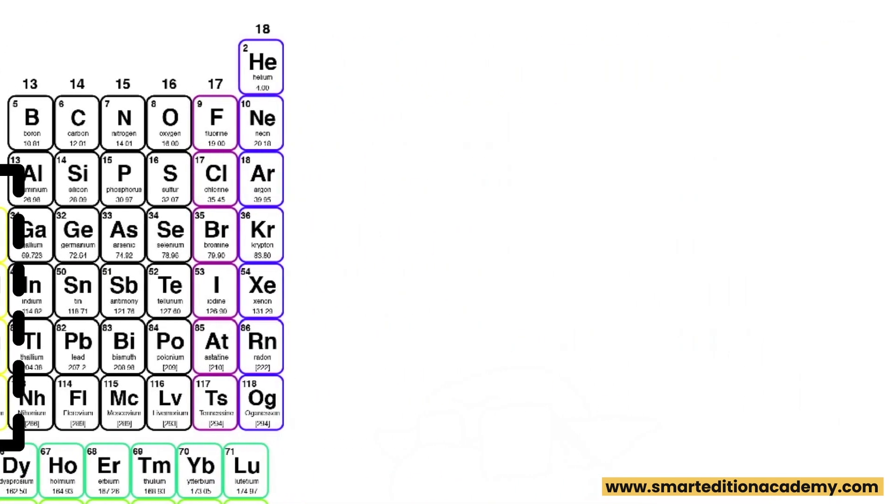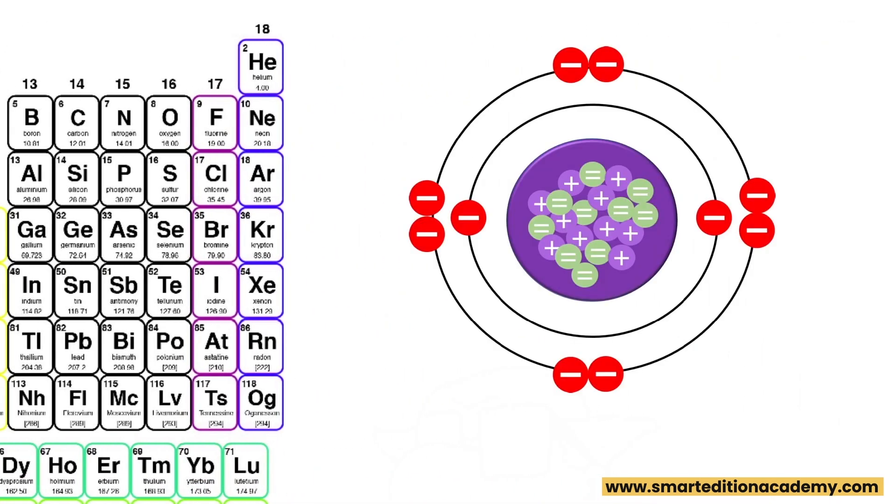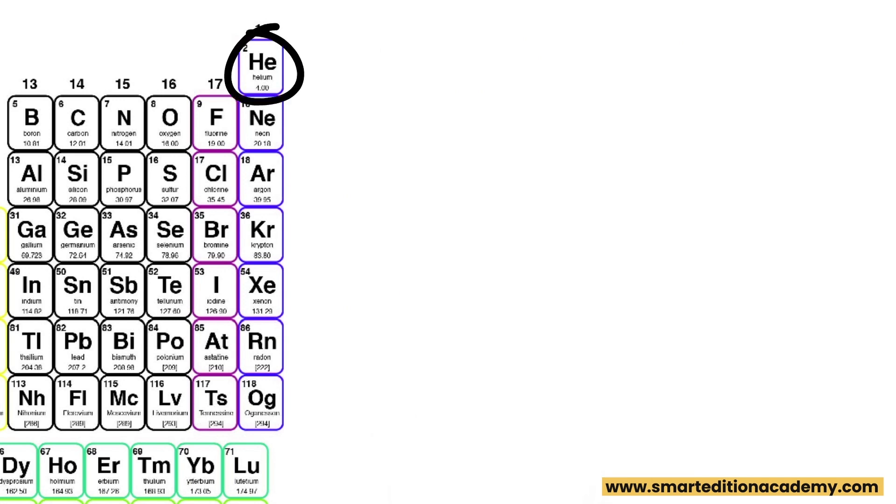But if elements are always seeking to fulfill the octet rule, what happens when we get to the last group, group 18, where there are eight valence electrons? This group is considered the noble gases, which yes, have eight valence electrons already, and are therefore considered stable. As a result, they don't need to react to become stable, and are found in nature as single elements, rather than in compounds of combined elements. And yes, that still holds true for helium.